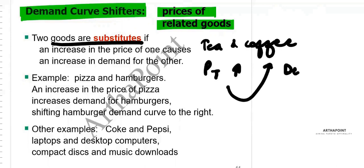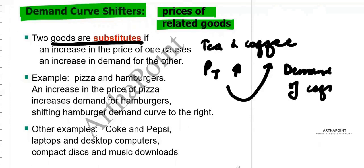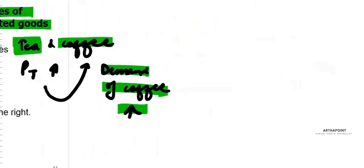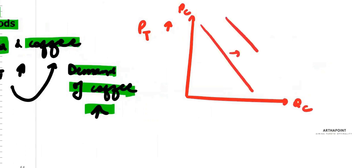So the demand — not quantity demanded, because nothing is happening to the price of coffee — the demand of coffee will increase. So when tea becomes expensive, people shift to coffee, and the demand of coffee increases. For the coffee market, we are going to see a rightward shift in the demand curve of coffee.